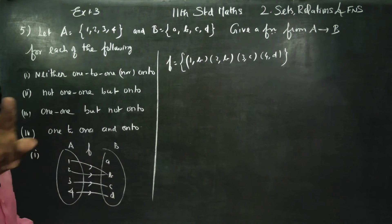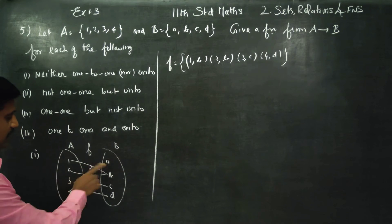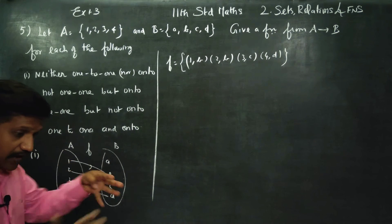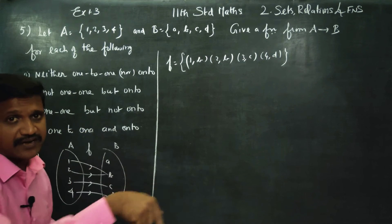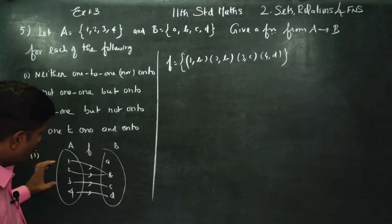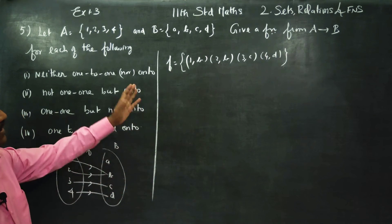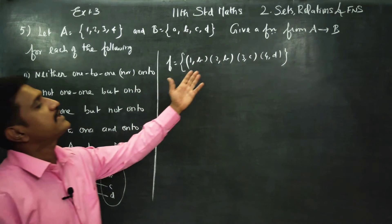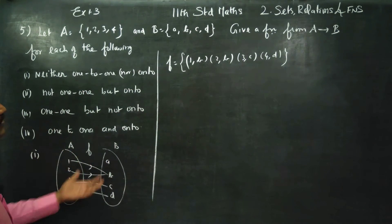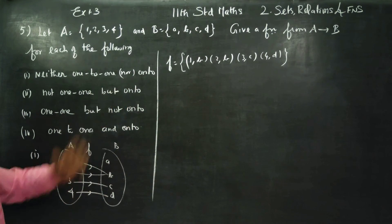If you look at the mapping — single arrow, double arrow, triple arrow, four arrows — you will see that each element touches exactly one image. So this is a valid function, and you can rewrite it in different forms.